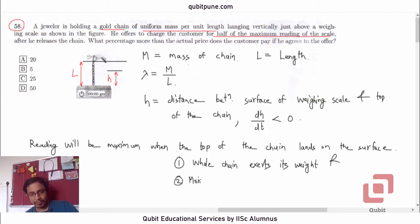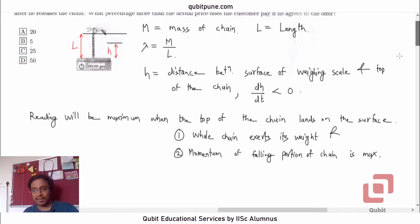And number two, the momentum of the falling portion of the chain is maximum. The velocity when released from height y is root of 2gy. So when y is maximum, the speed will also be maximum. This is when h equals 0. Initially, h equals l. That is where the fall of the chain begins.